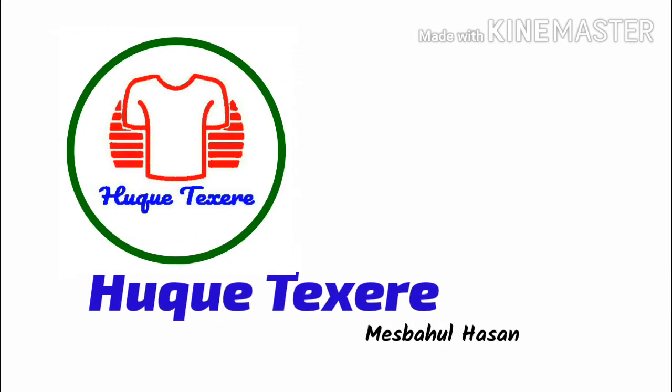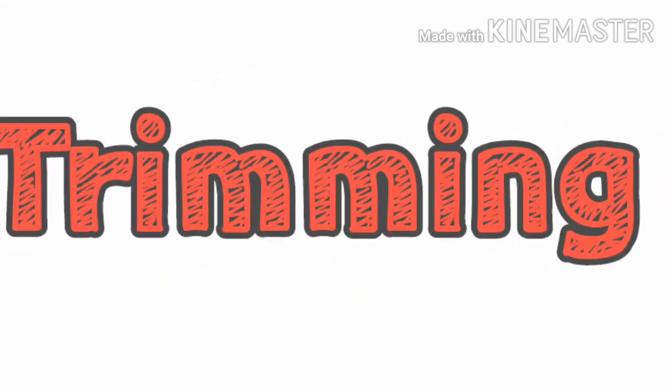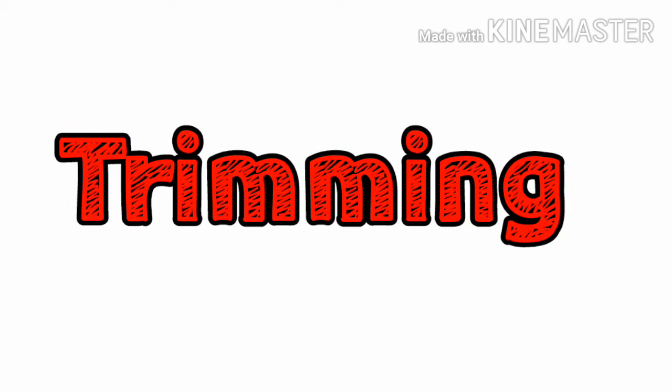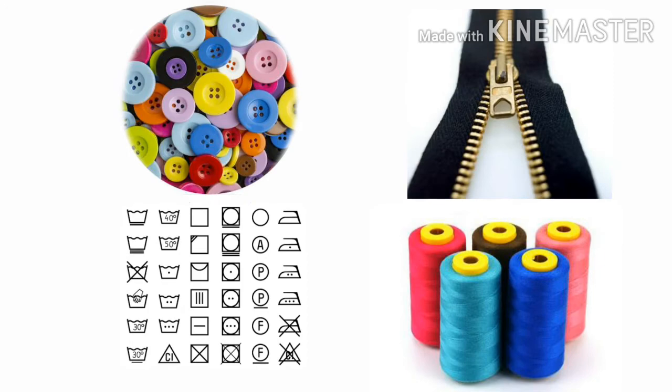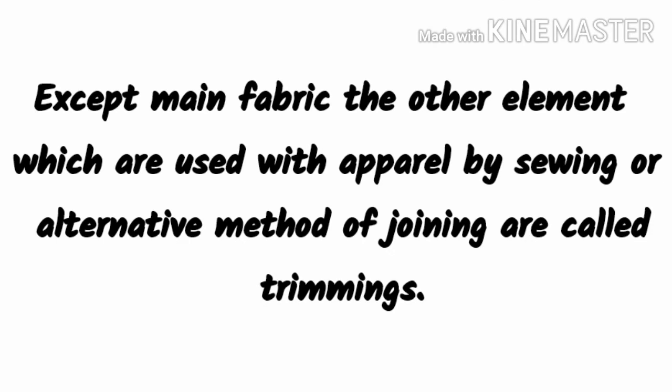Hi, this is Majbalas and welcome. In this video today I'll talk about trimming. To make apparel, we need many elements such as buttons, zippers, labels, or thread. These are called trimming.